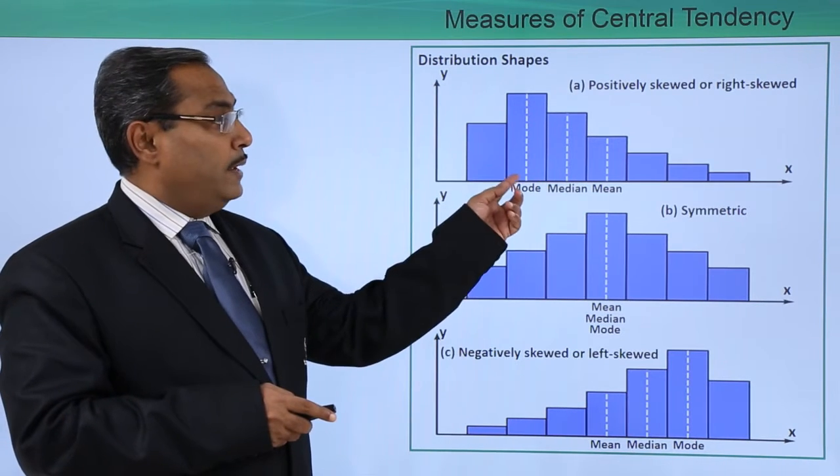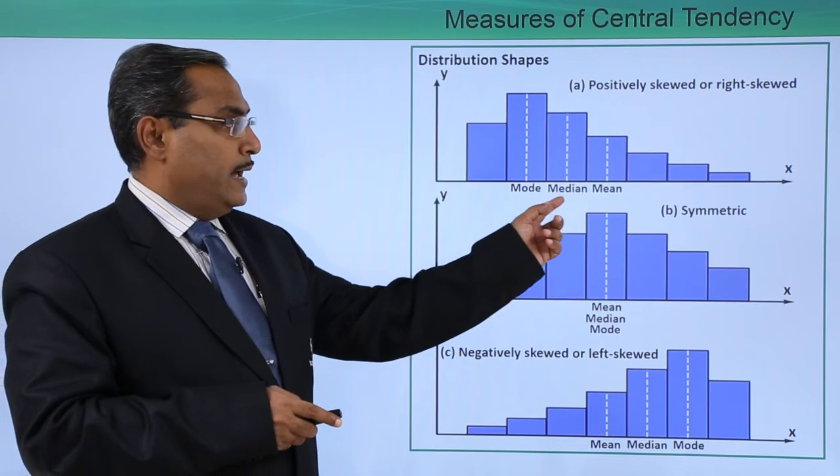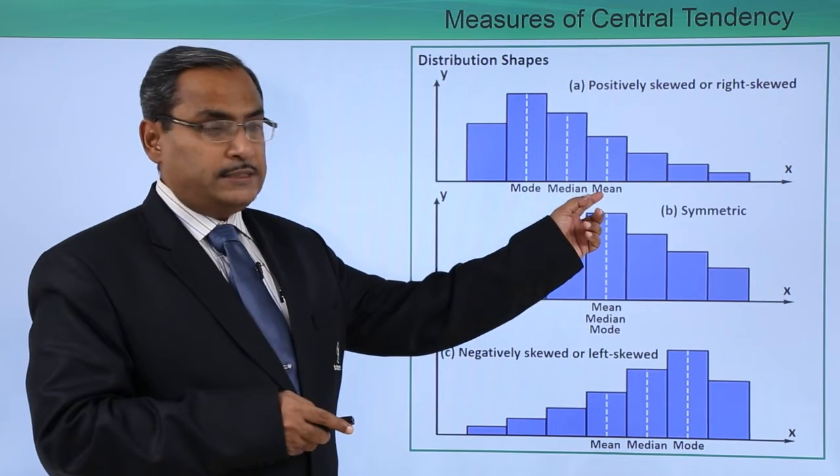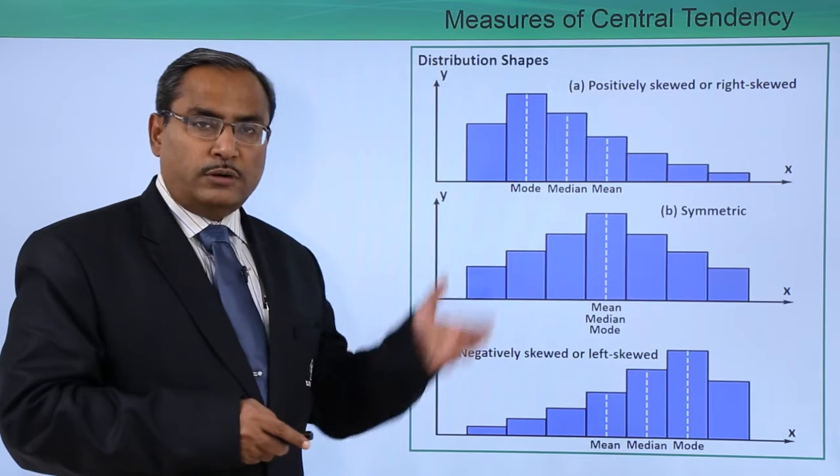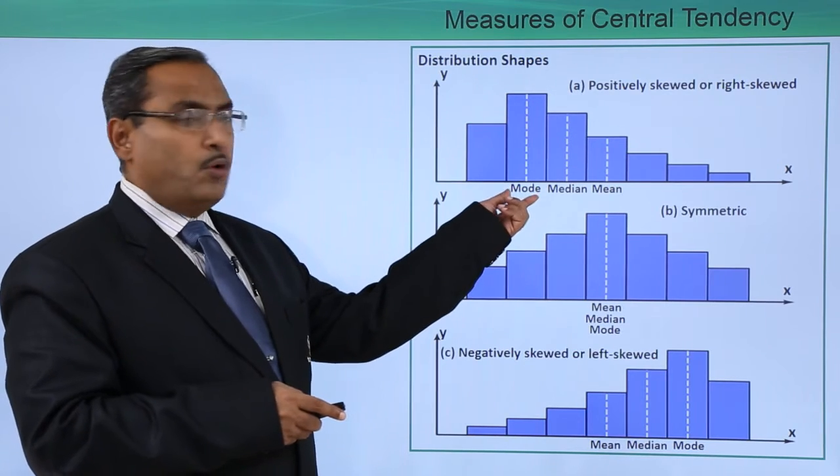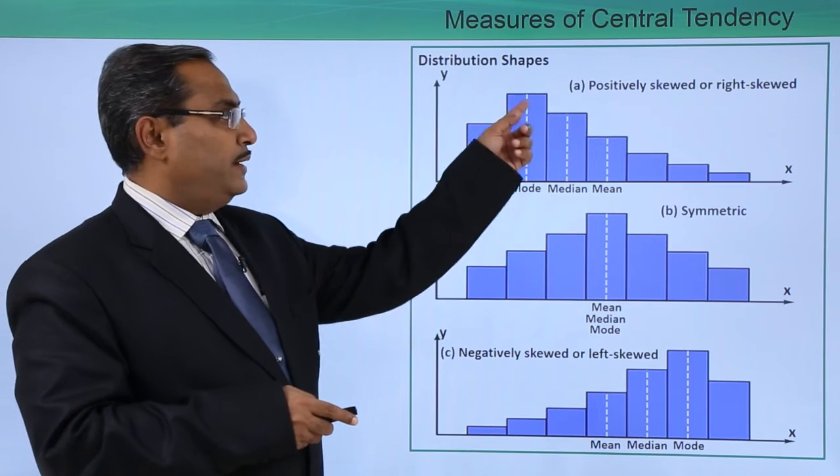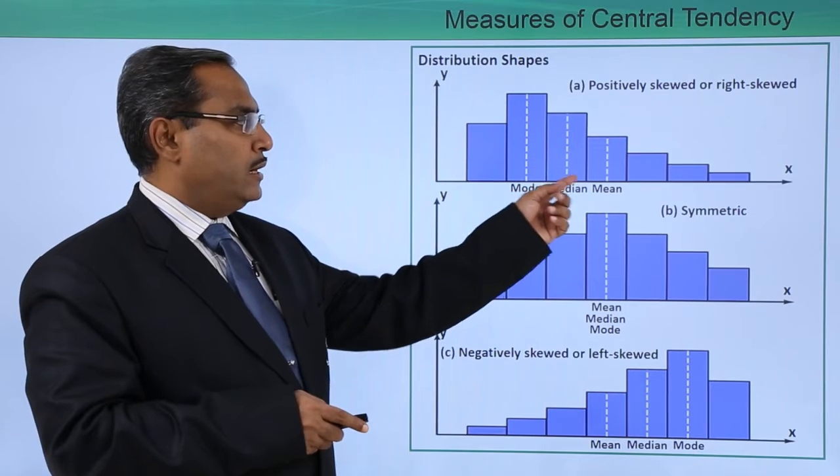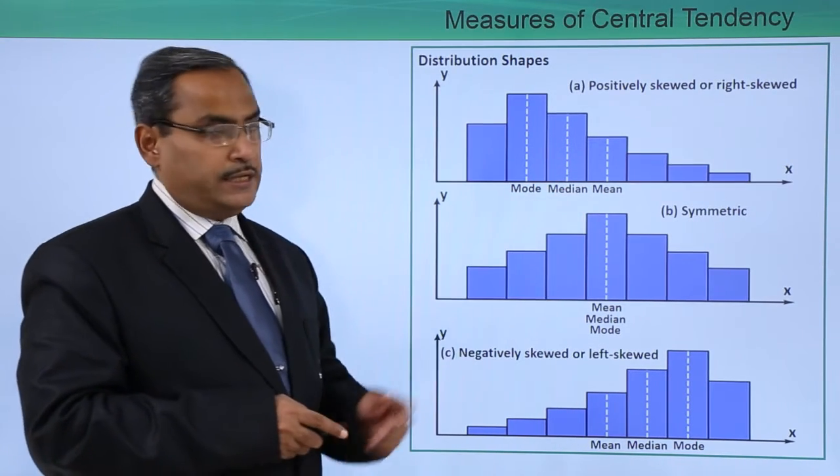The mode will be existing here. Median will be there and the mean value will be existing in this respective class. Here you can find that we have drawn histograms and this mode is that very particular class which is having the highest frequency. That is why this is the mode here. Median will be lying in this particular class between these lower and upper limits, and mean will be existing here.